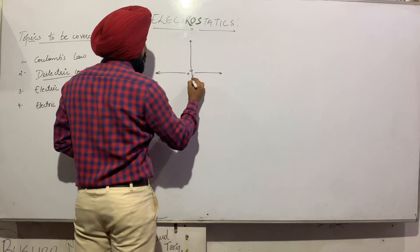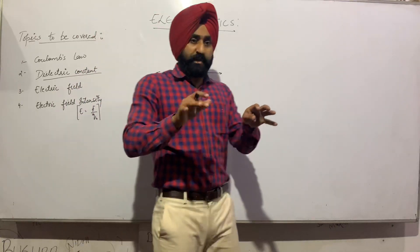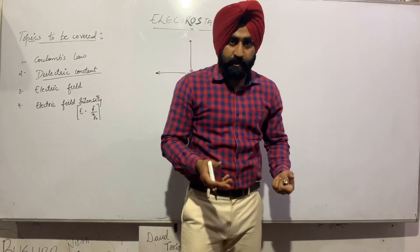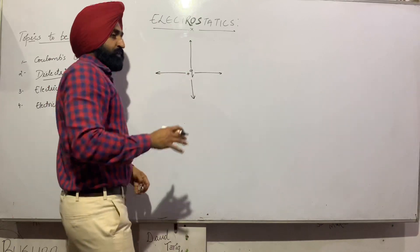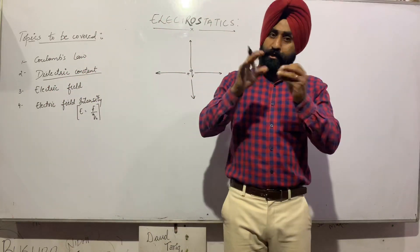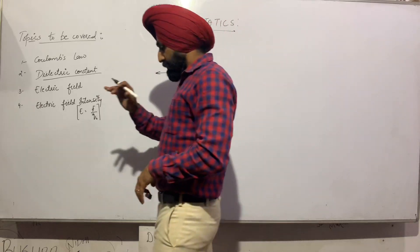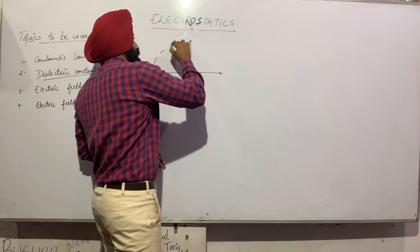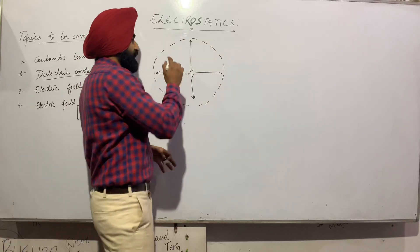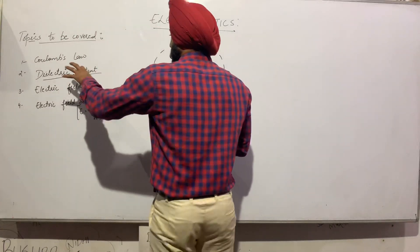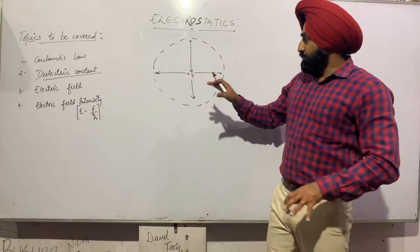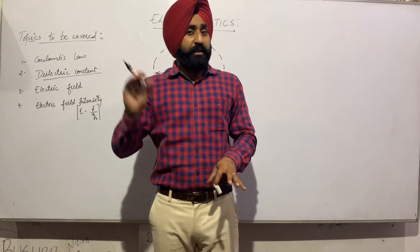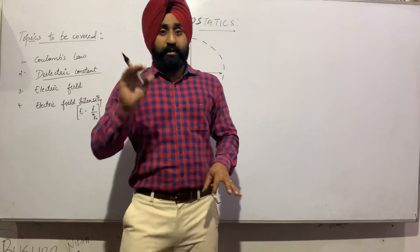Every side the electric field lines will go. Now, when they go on every side, if I want to enclose those electric field lines, I will draw a sphere around the charge. To cover those particular electric field lines, I draw a sphere. So a particular area — basically the region where another charge can experience the force of attraction or repulsion — is the electric field.